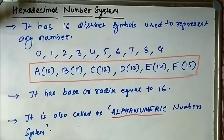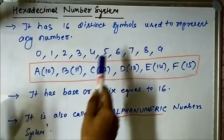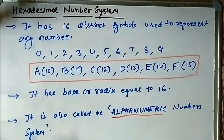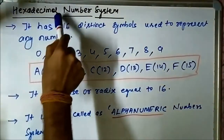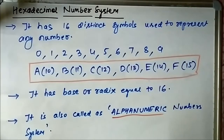The hexadecimal number system has 16 distinct or unique symbols available which are used to represent any hexadecimal number. This number system has 16 symbols available with it. The binary system had two symbols, the octal system had eight symbols, the decimal system had 10 symbols, and the hexadecimal, as the name suggests, has 16 distinct symbols. Hexa means 6 and decimal means 10, so combined there are 16 distinct symbols — that is why the base or radix of this system is equal to 16.